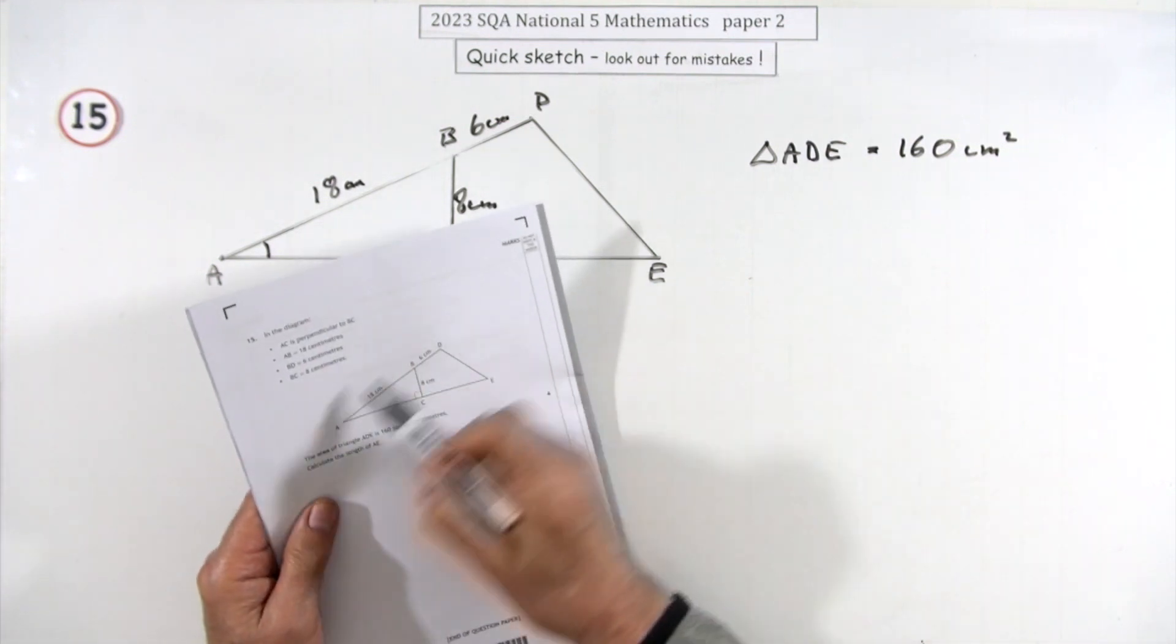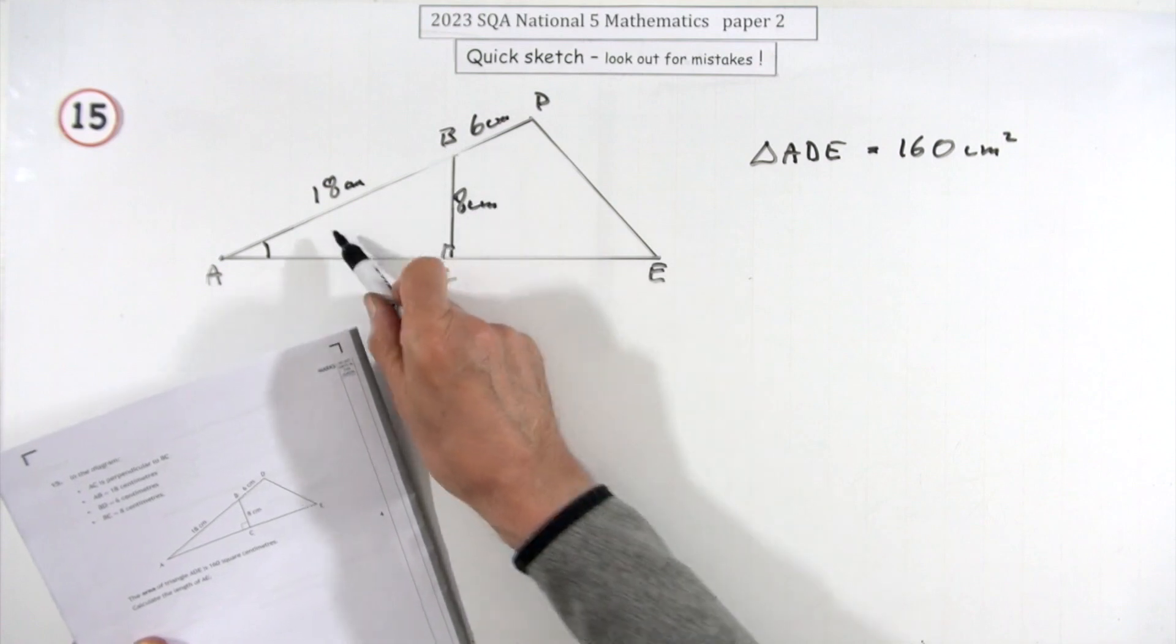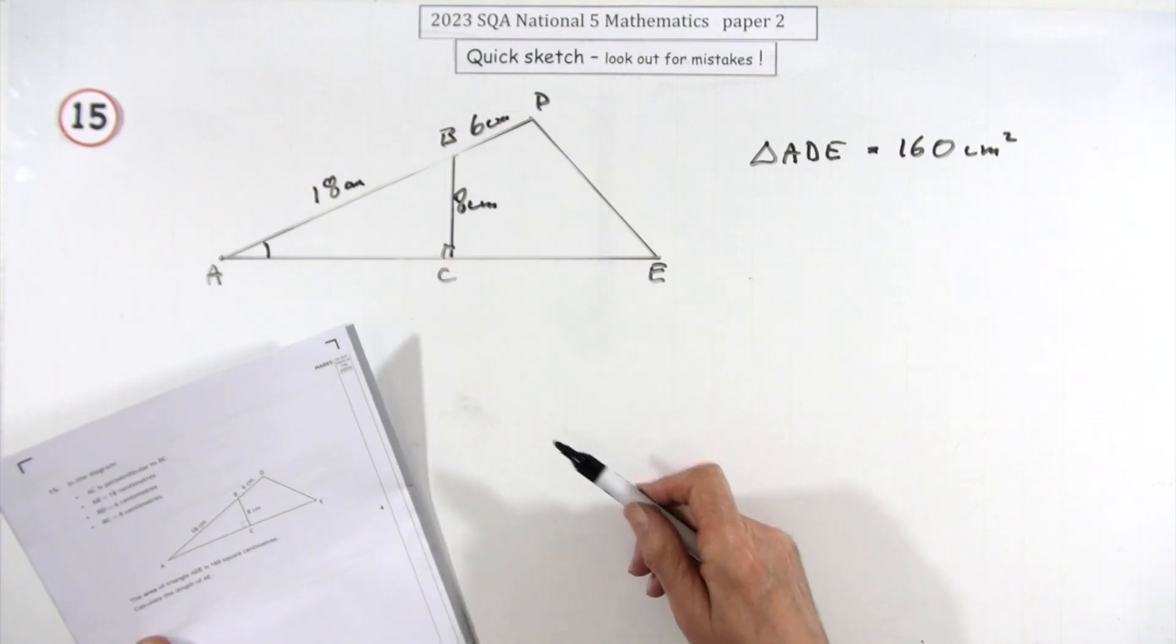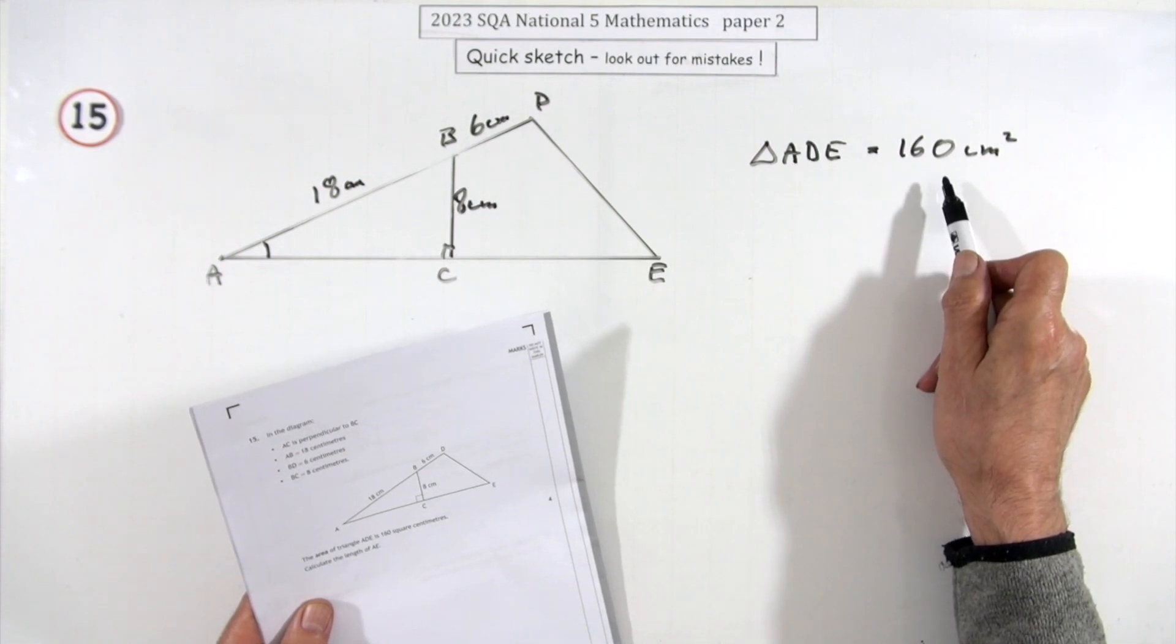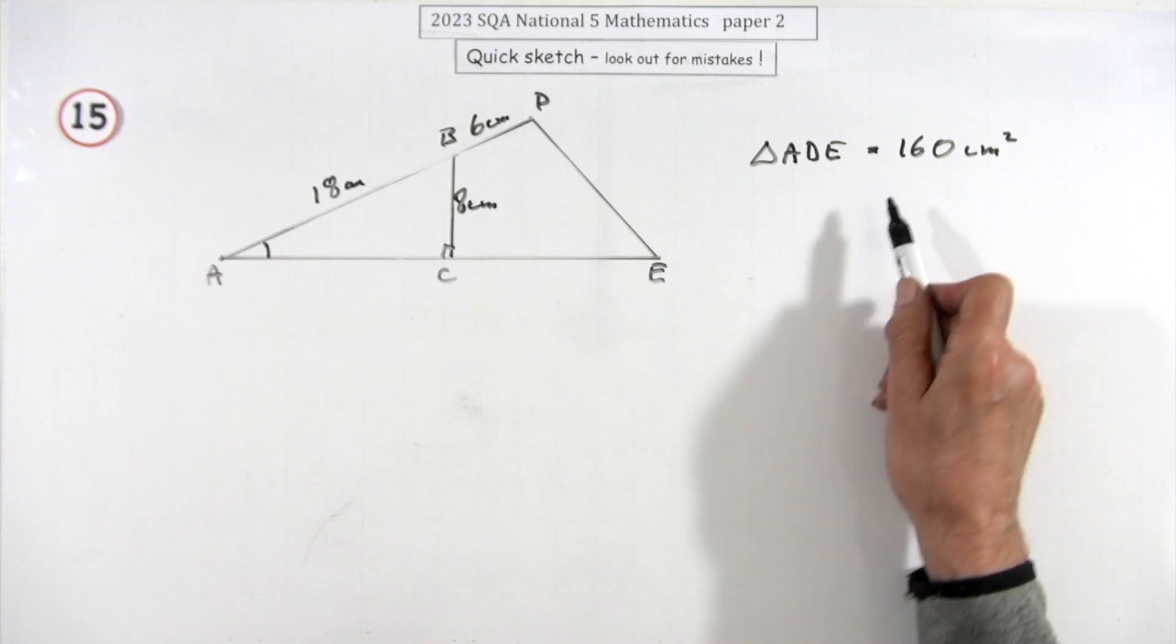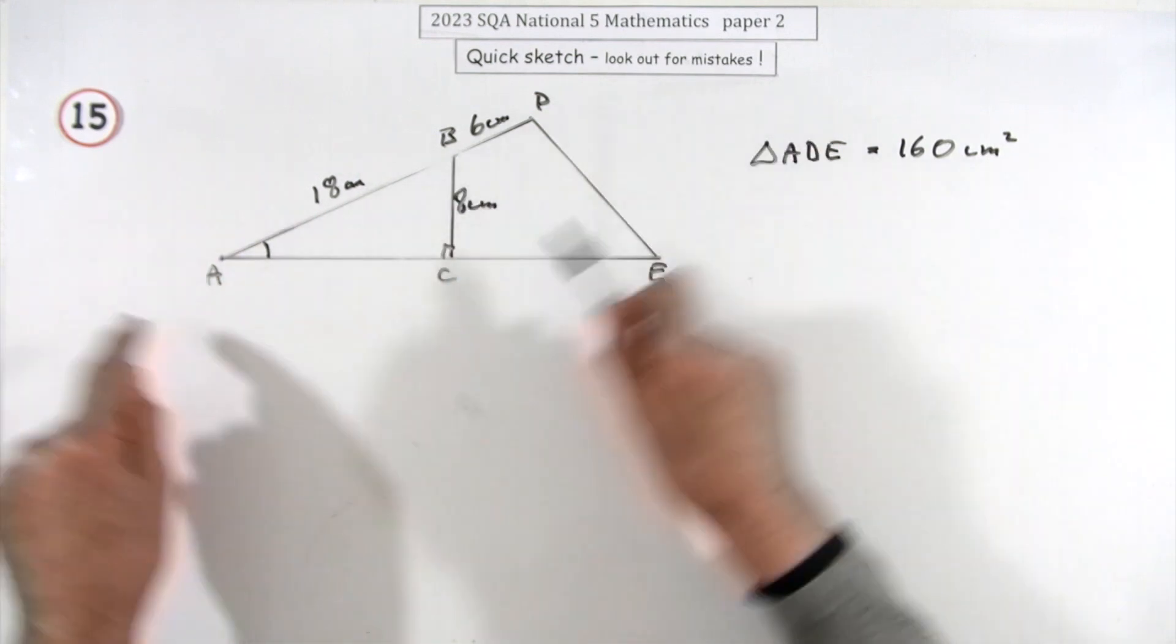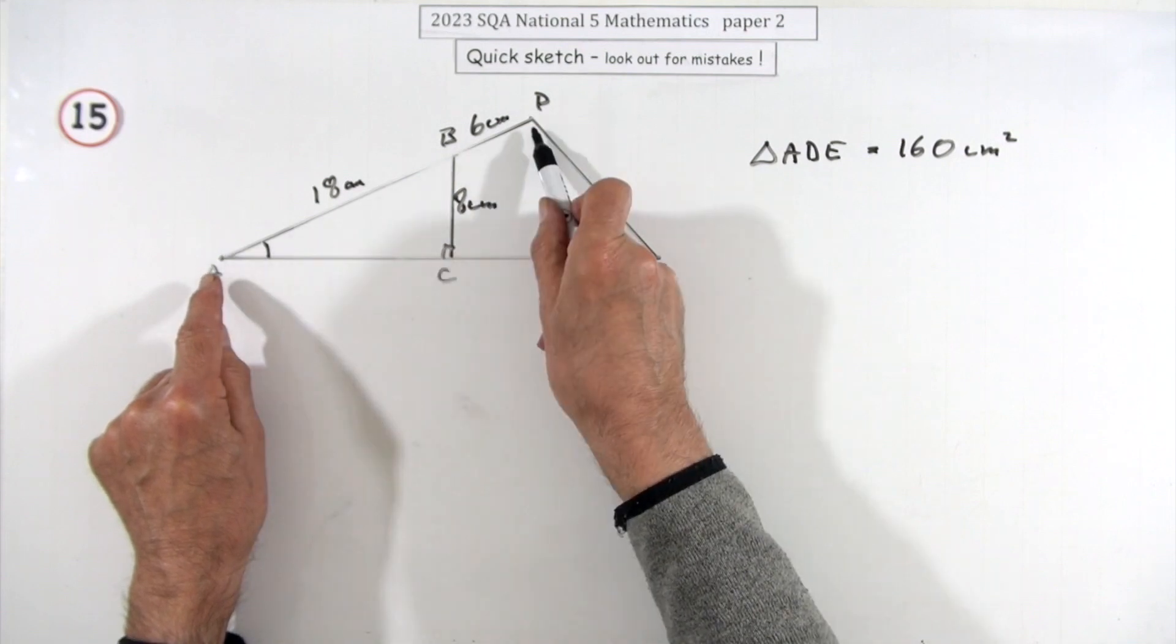Question 15, the last question. You've got this large triangle with a small right-angle triangle tucked into one corner. Gives you the various sizes. It tells you the area of that triangle is 160. You have to work out the length of AE. You know how to work out the area of the big triangle because the E is a length in the big triangle.